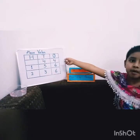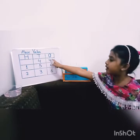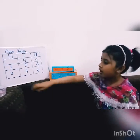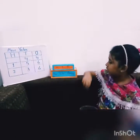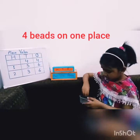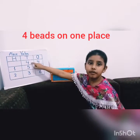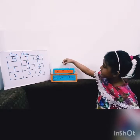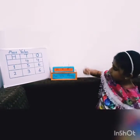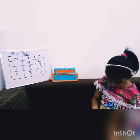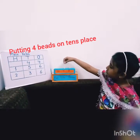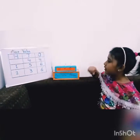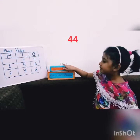This is my number board. My first number is 44. 4 is on the 1's place, so I will put here 4 beans. 4 is on the 10's place, so I will put here 4 beans. This is my number 44.